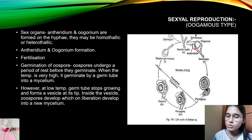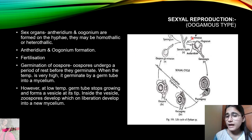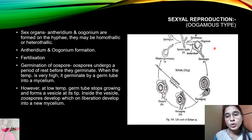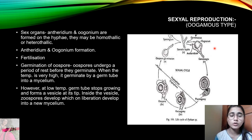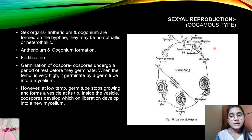The formation of oogonium and antheridium: the hyphae are converted into globular structures. When the oogonium and antheridium form, many nuclei accumulate and continuously divide. However, not all nuclei are functional. At the time of fertilization, only one nucleus is functional and the rest degenerate. Similarly in the oogonium, at the time of fertilization, the oogonium is a multi-nucleated structure but all except one degenerate.